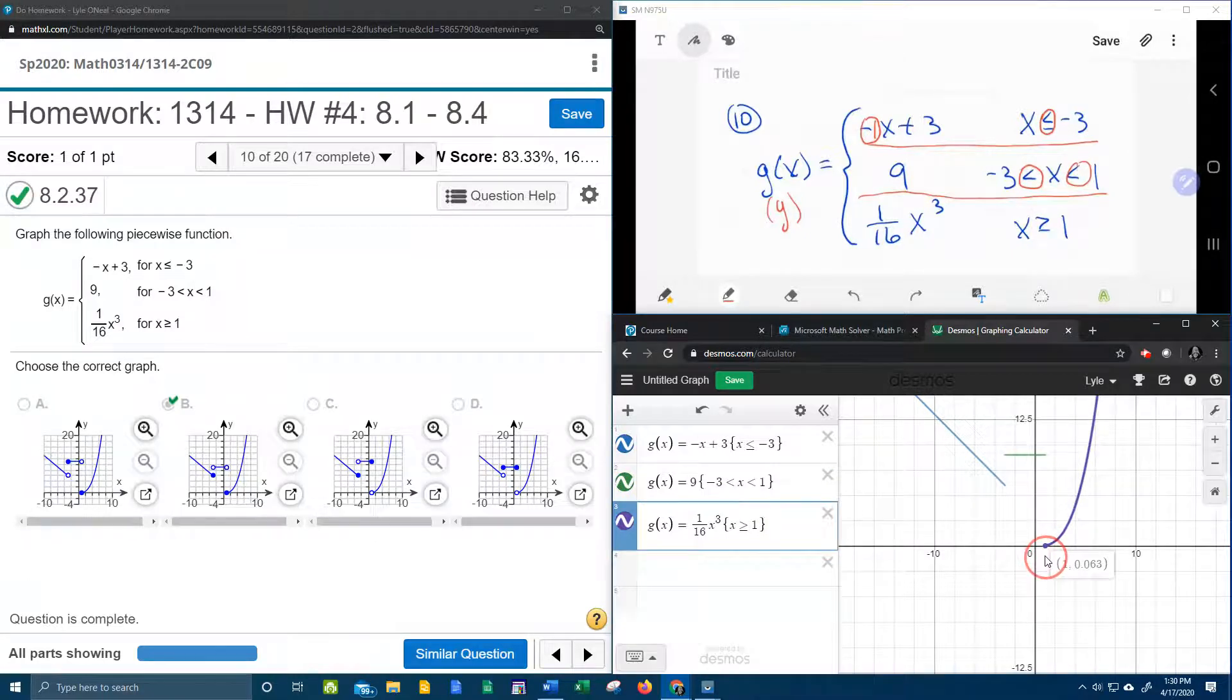again showing that that ends in a solid dot. So if we compare this Desmos graph to the one that we clicked on, we can see that those do look identical, and they had the appropriate starting and stopping points there, open circles and solid dots.